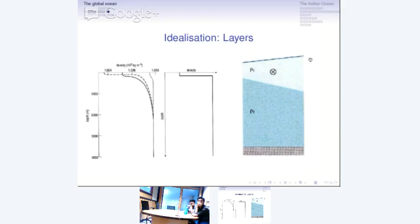You have high pressure to the right in the northern hemisphere. In the southern hemisphere, you have high pressure to the left. So you have Ekman flows with the flow being at right angles to the applied wind stress, to the right in the northern hemisphere, to the left in the southern hemisphere.